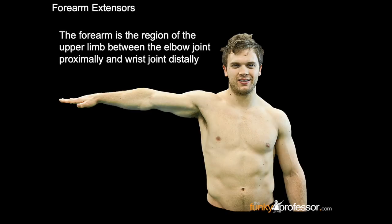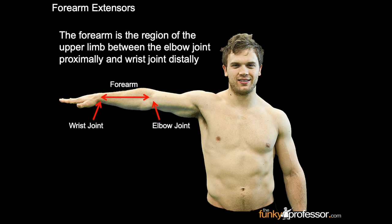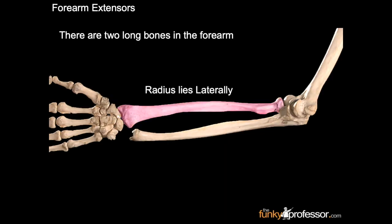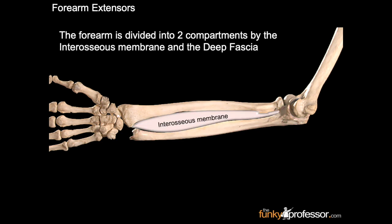Extensors of the forearm. The forearm is the region of the upper limb between the elbow joint proximally and the wrist joint distally. There are two long bones in the forearm: the radius lies laterally and the ulna lies medially. The forearm is divided into two compartments by the interosseous membrane and the deep fascia.